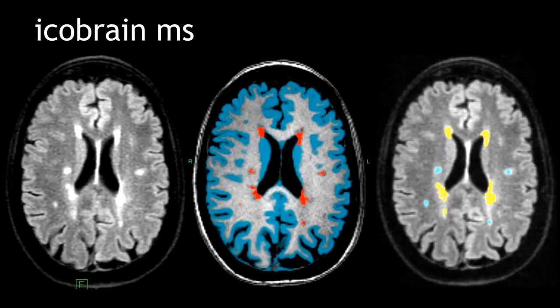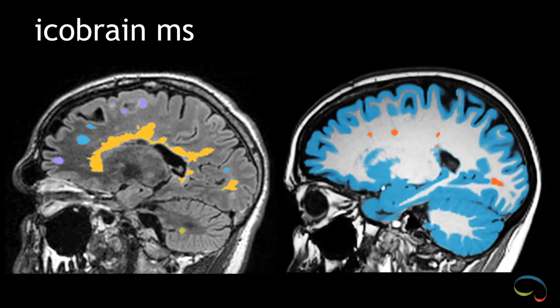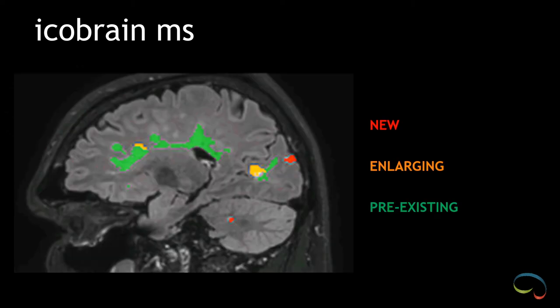IcoBrain segments the cortex and the plaques and color codes the plaques according to location. Regional segmentation is labeled as purple juxtacortical, yellow periventricular, green infratentorial, and blue deep white matter. Dynamic segmentation is also performed with new plaques marked as red, enlarging plaques as orange, and pre-existing stable plaques as green.